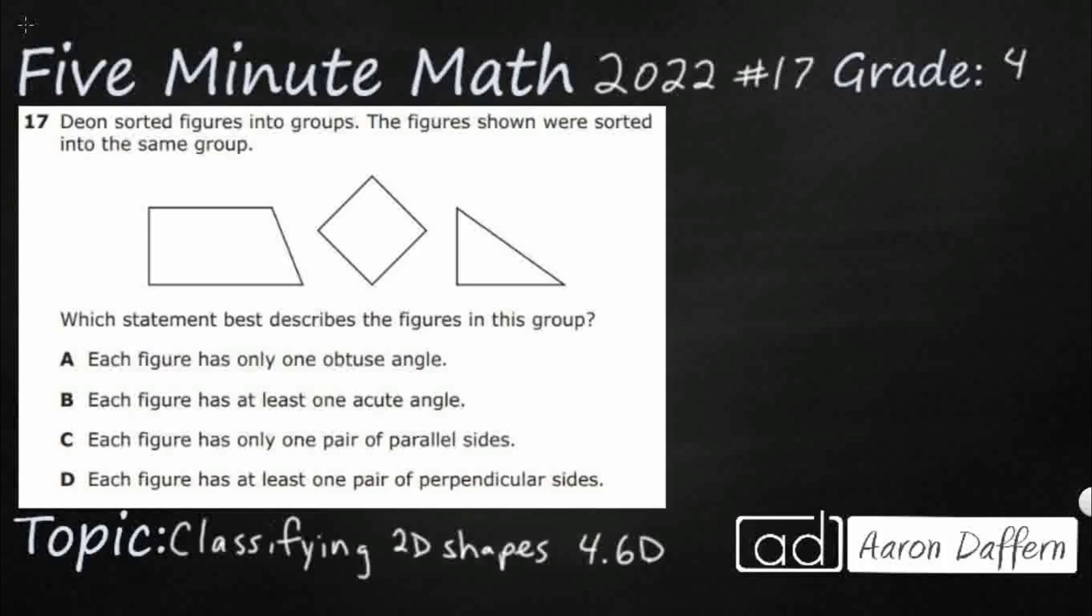Hello and welcome to 5-Minute Math. Today we are looking at the fourth grade concept of classifying 2D shapes. This is standard 4.6D in the great state of Texas and we are using item number 17 of the 2022 released star test.